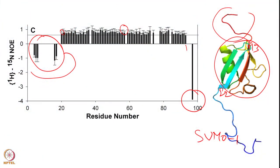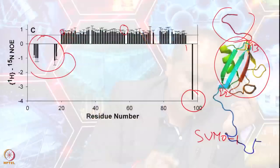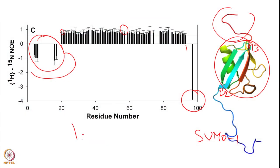In summary: record an NOE experiment with a 5-second relaxation delay, saturate the proton for about 3 seconds in one case and not in the other, record 2 HSQC spectra, measure the intensity of each peak, and calculate the heteronuclear NOE as I_sat / I_unsat. This gives residue-specific NOE values and errors, providing information about fast amplitude motion in a residue-specific manner.